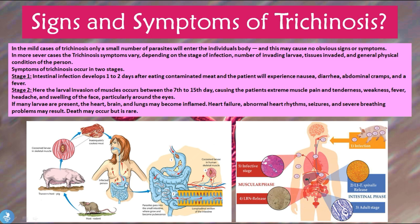Once stage one is completed, the larvae grow into full adult worms — small longitudinal cylindrical worms — which produce more larvae that begin to infiltrate the muscle. This leads to stage two, the muscular phase, occurring between the 7th and 15th day. The patient experiences extreme muscle pain and tenderness, weakness, fever, headache, and swelling of the face, particularly around the eyes.